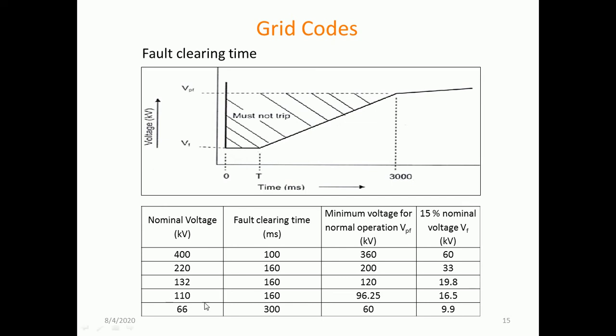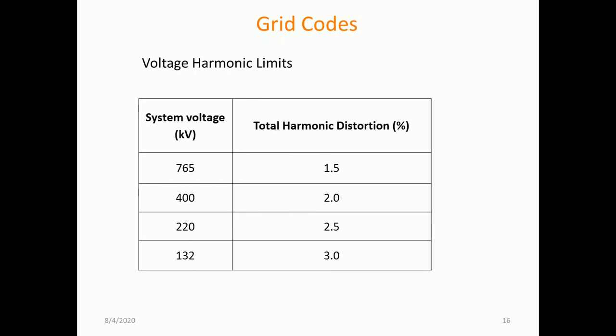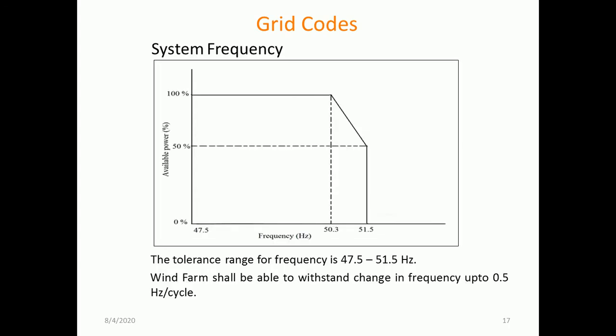We will look at the reference of nominal voltages, the fault clearing time, the minimum voltage for normal operation, and the 15% of nominal voltage requirement. For the harmonic limits at 130 kV system voltage, the percentage THD should be almost 3%, which is an indication of good power quality — that the harmonic content in the system is within the prescribed limits. As per the Indian electricity rules, the variable frequency limit is in the range of 3%, with tolerance range for frequency being 47.5, 48.5, and 51.5 Hz. Wind farms shall be able to accommodate a change in frequency up to 0.5 Hz per cycle.